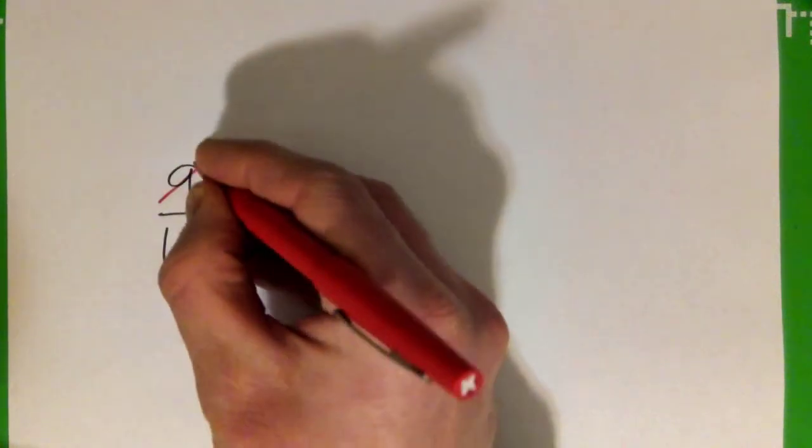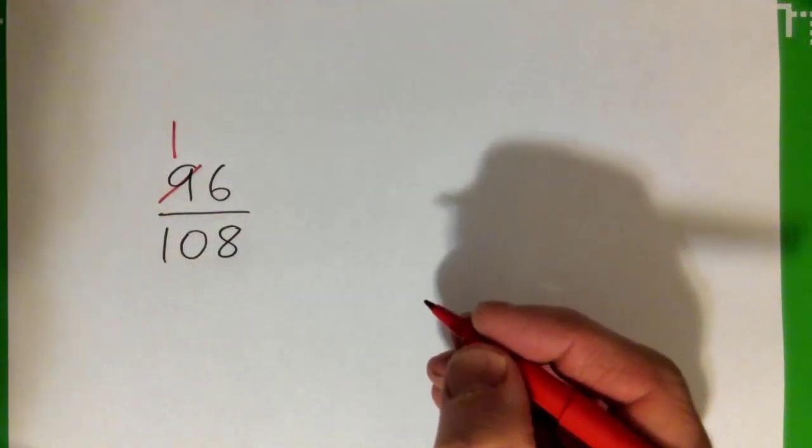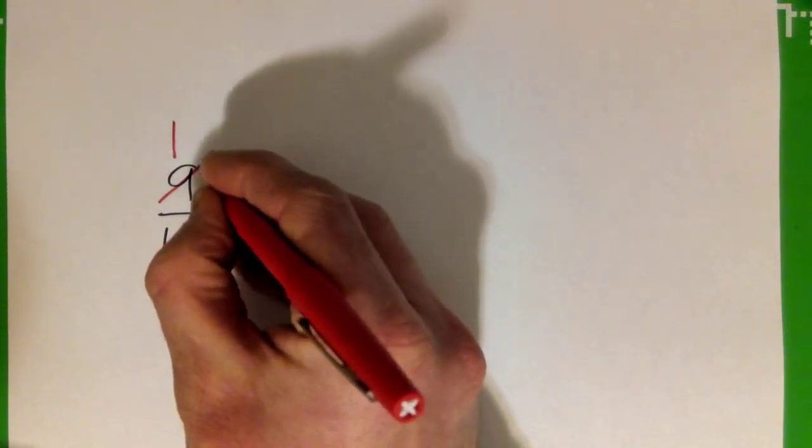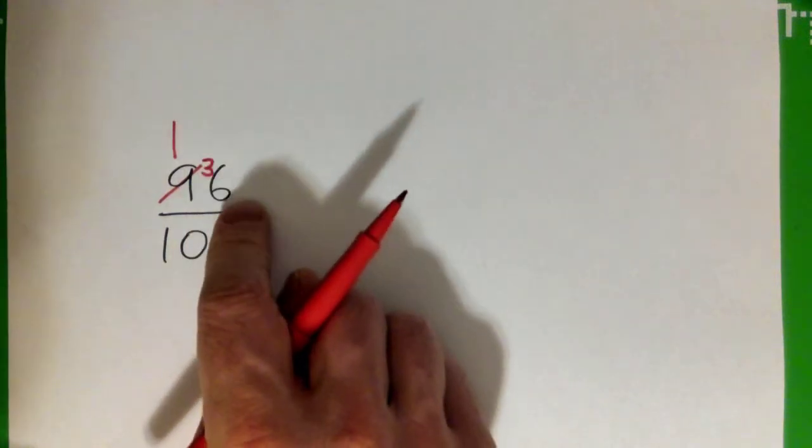Look at this. 6 into 9 goes one time, remainder what? Remainder 3, right? And you can put that 3 beside this 6, and now it's 36.